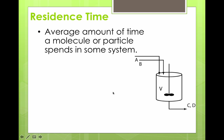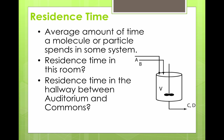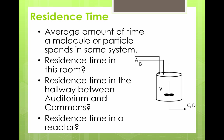Residence time is the average amount of time that a molecule or particle spends in our system. We can think of it like your time spent in class, or your time walking through a hallway between areas. The way we calculate residence time of a molecule in a reactor is the volume of the reactor divided by the flow rate of the products.